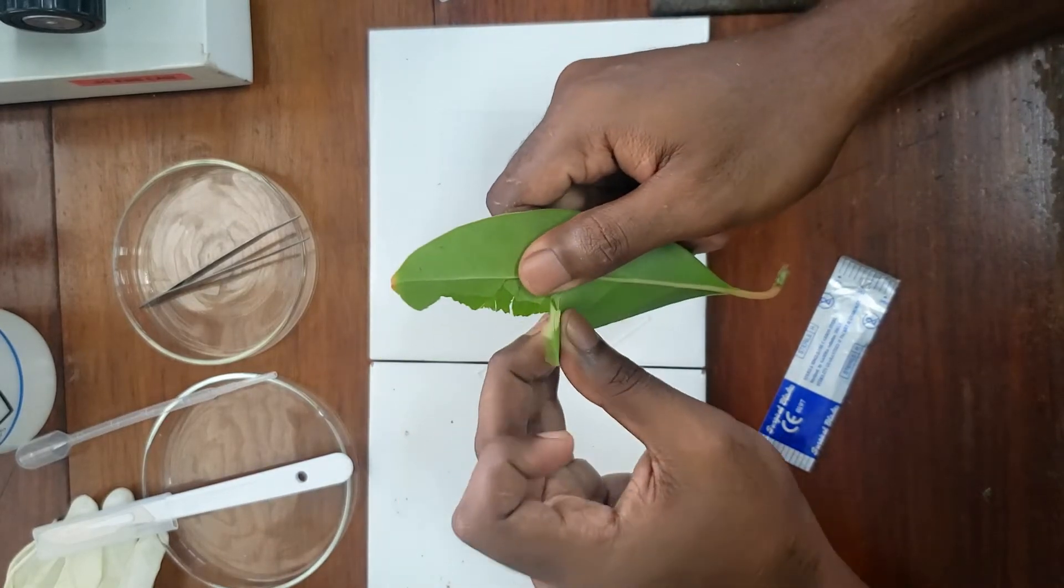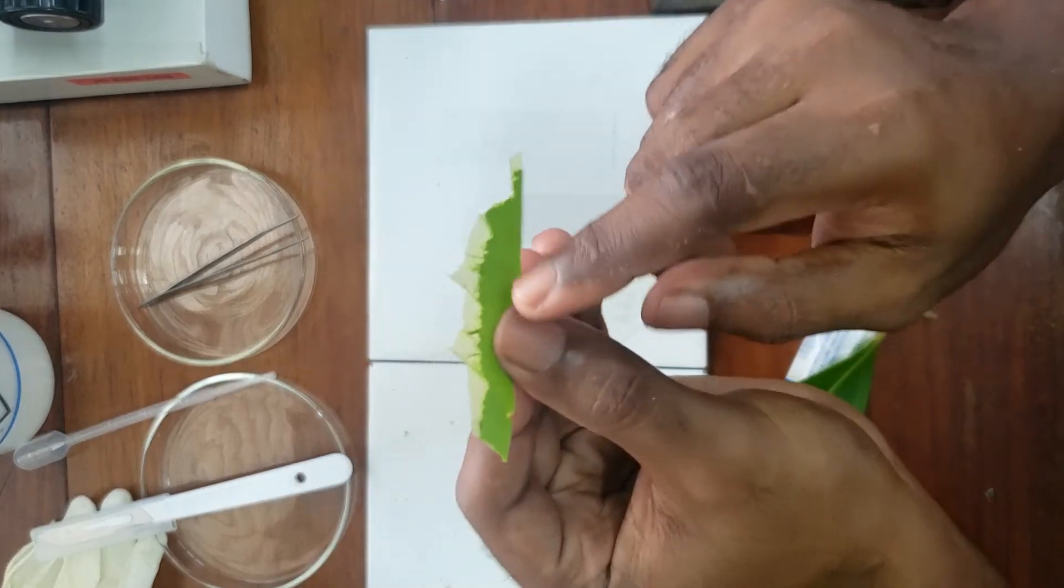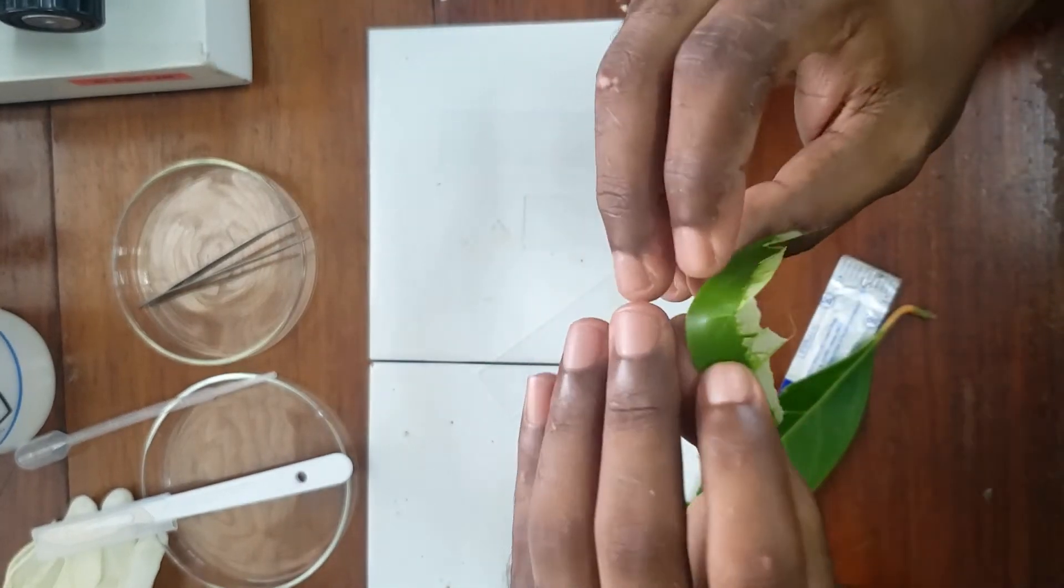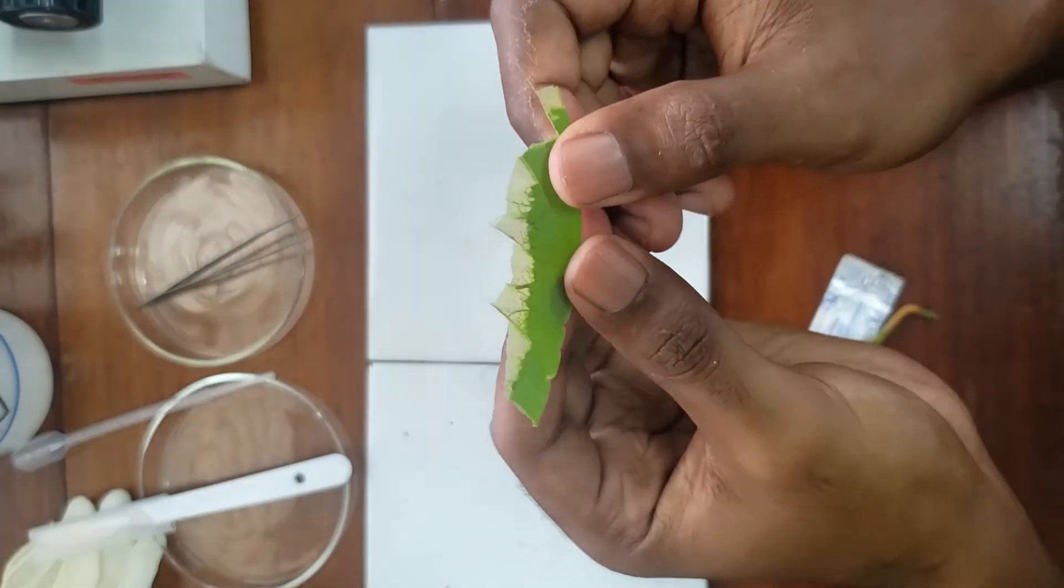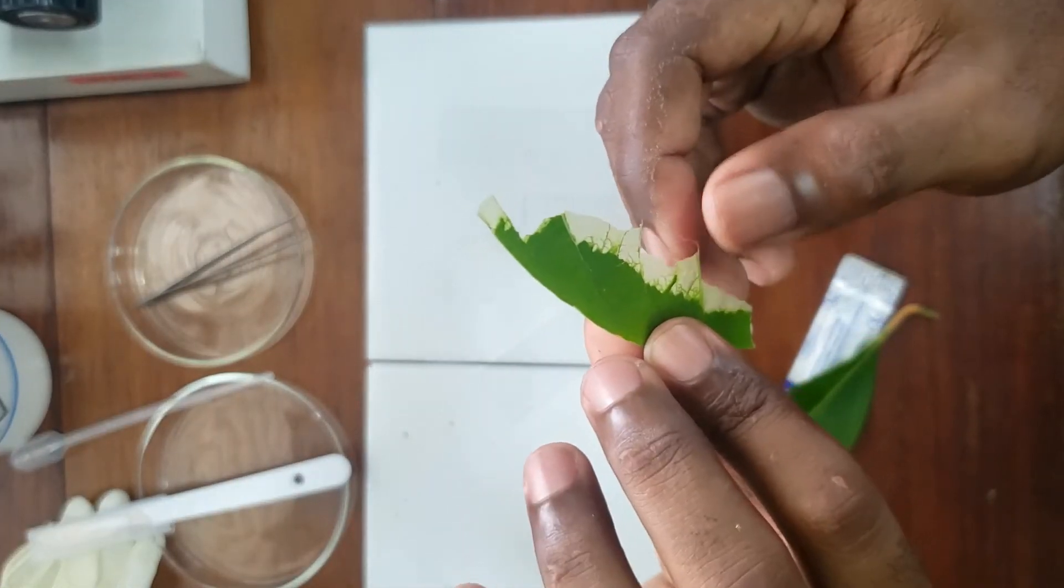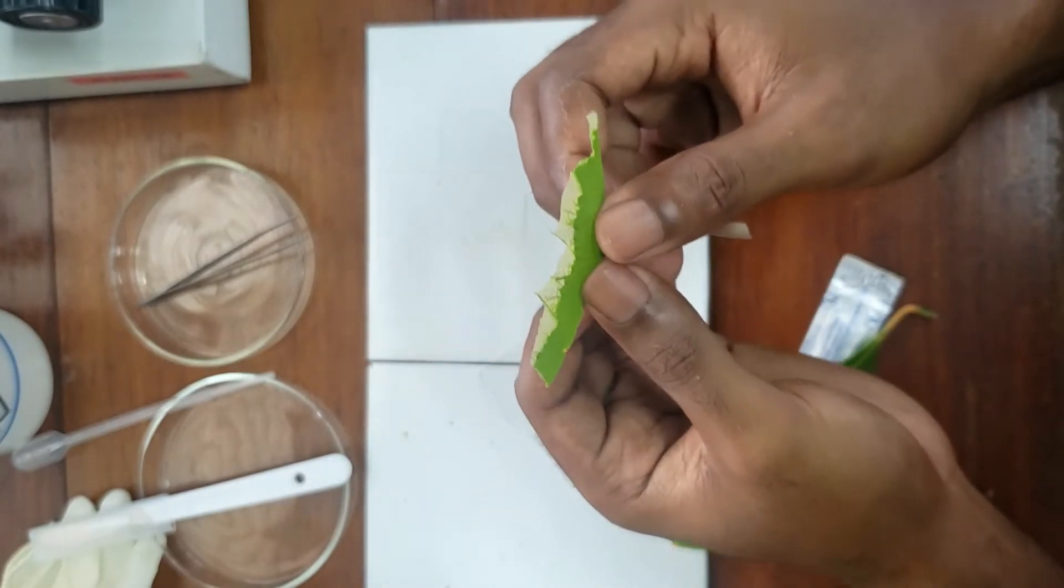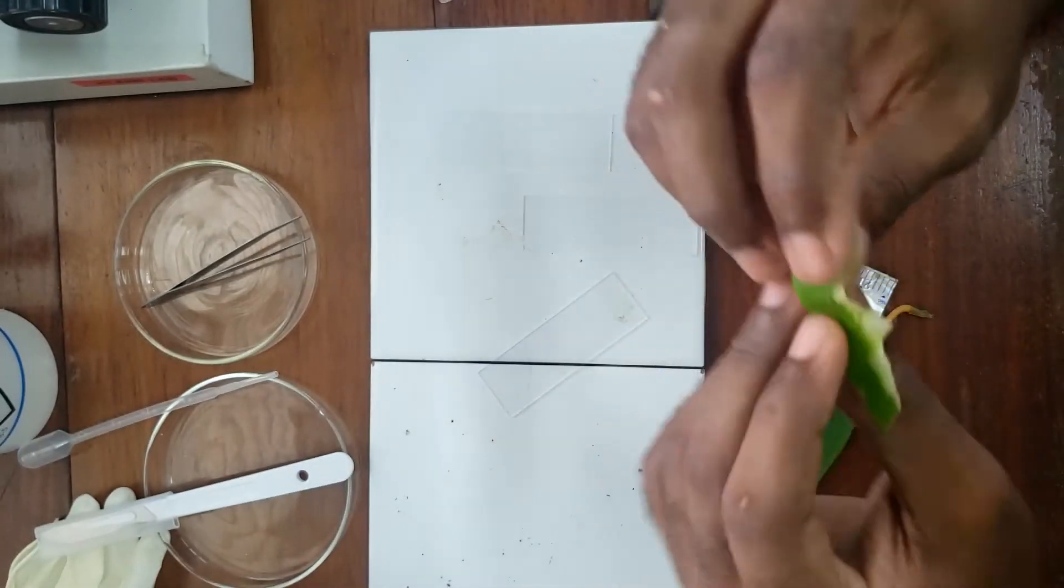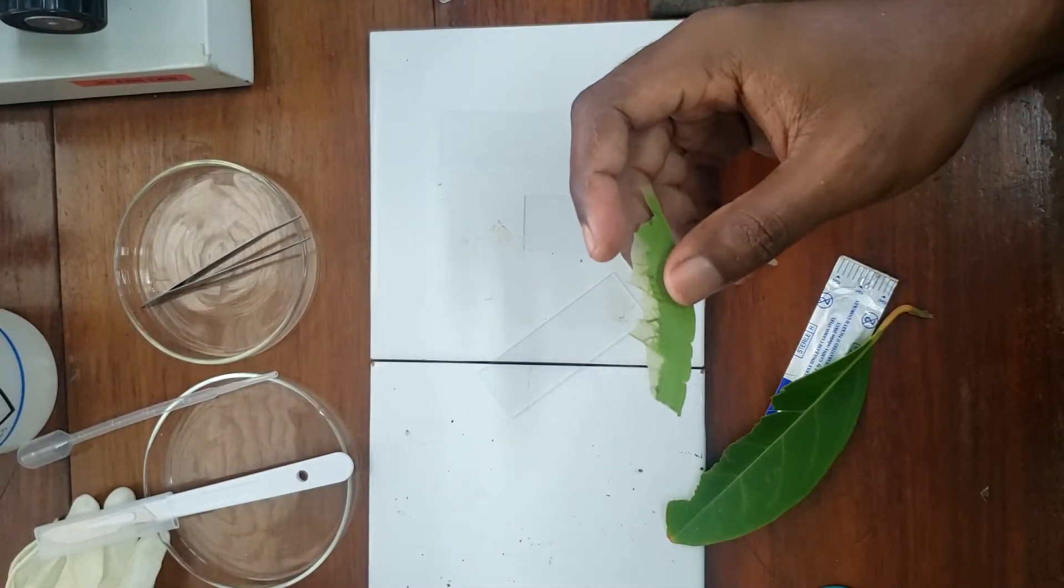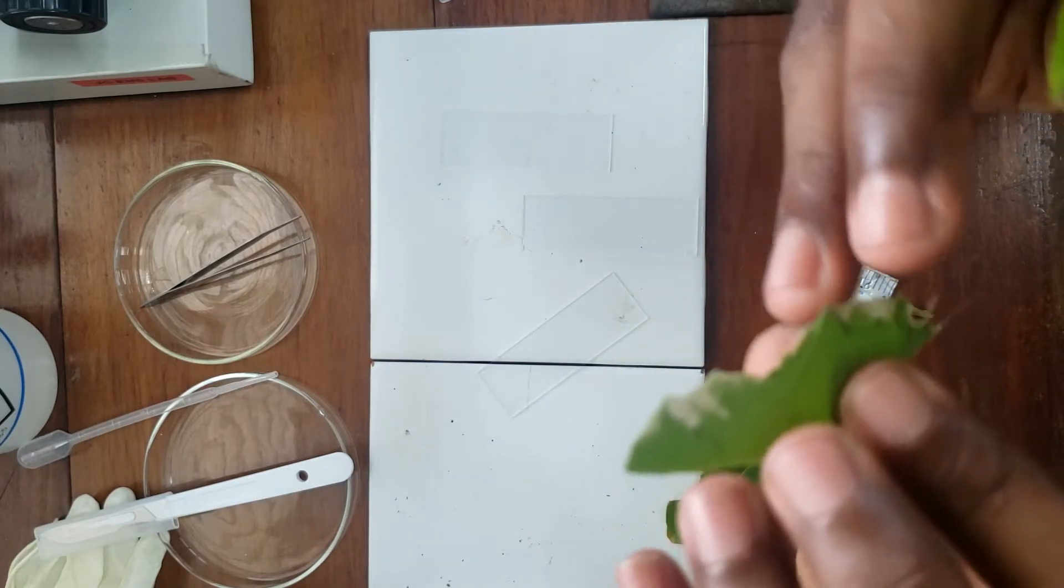We just tear towards that back of the leaf. We normally get this white film, so that should be a thin enough section for us to then stain and observe under the microscope. Now you want to make sure you use the correct direction when you're tearing the leaf, because if you tear towards the front of the leaf you're going to get the upper epidermal layer.